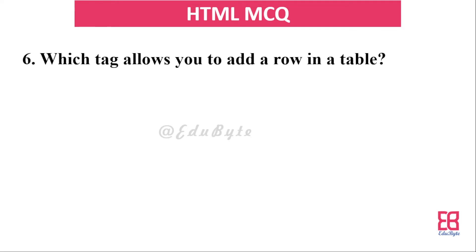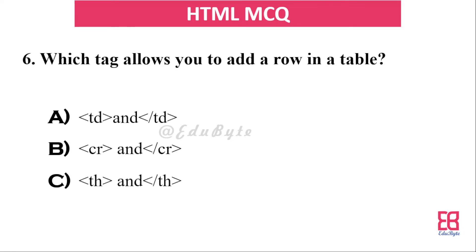Question six: which tag allows you to add a row in a table? The options include TD, TCR, TS, and TR. The correct answer is `<tr>` — TR means table row, which adds a row inside a table.